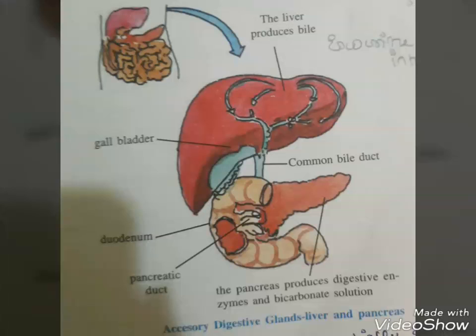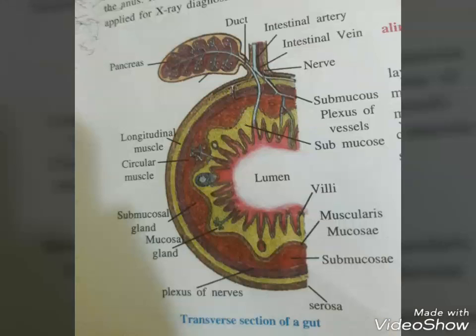The cecum opens into the colon. The colon is divided into three parts: an ascending, a transverse, and a descending part. The descending part opens into the rectum, which opens out through the anus.